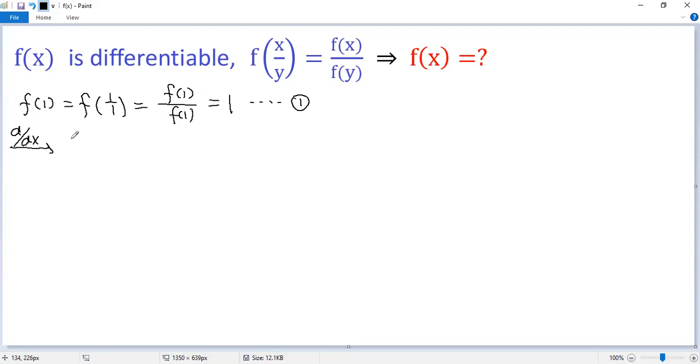Using the chain rule, it equals the derivative of the outer function. So we apply x over y times the derivative of the inner function, but x is the variable, so we get 1 over y.